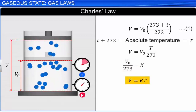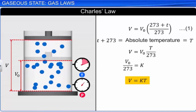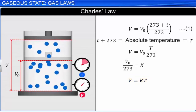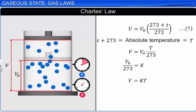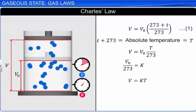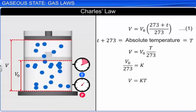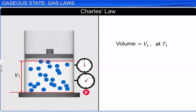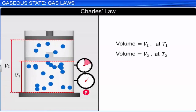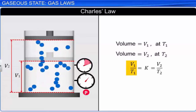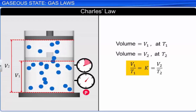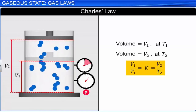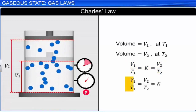This is the mathematical expression for Charles' law, which states that the volume of a fixed mass of a gas is directly proportional to its absolute temperature if the pressure is kept constant. If a given gas occupies volume V1 at temperature T1 and volume V2 at temperature T2, then by Charles' law V1 divided by T1 equals K, which in turn equals V2 divided by T2. Therefore V1/T1 equals V2/T2 equals K. This is called the Charles' law equation.